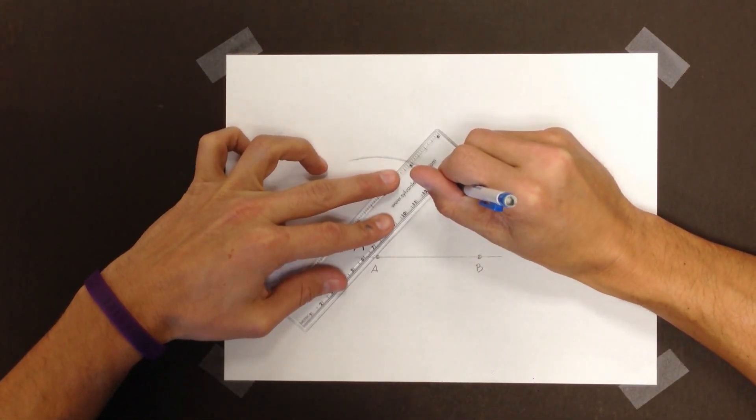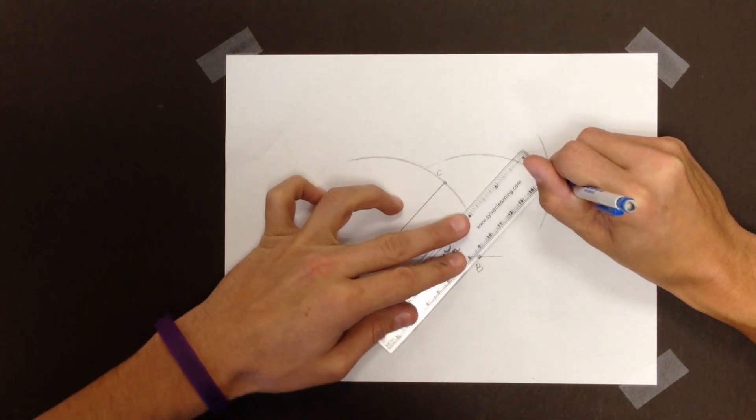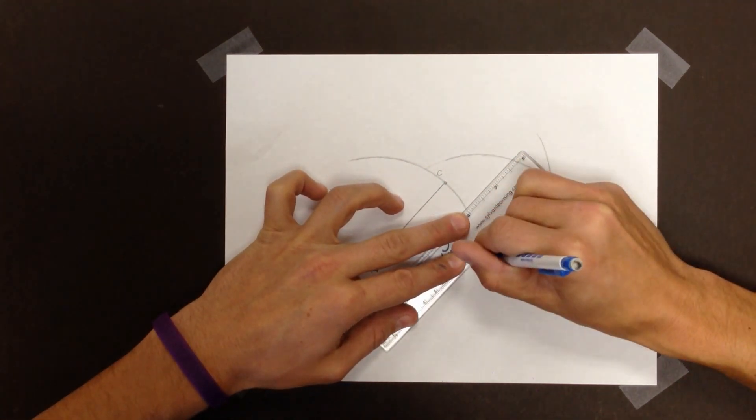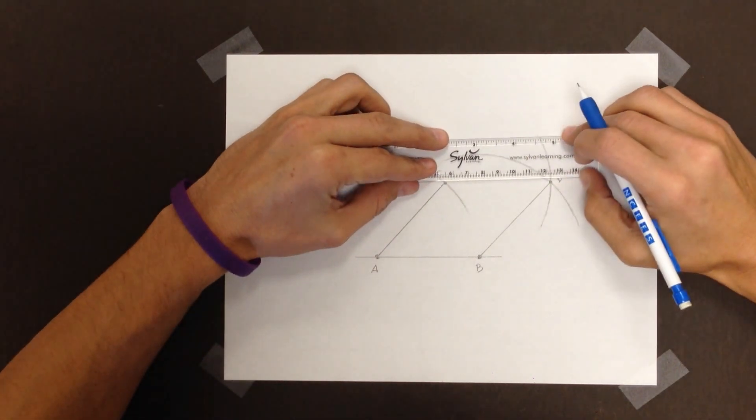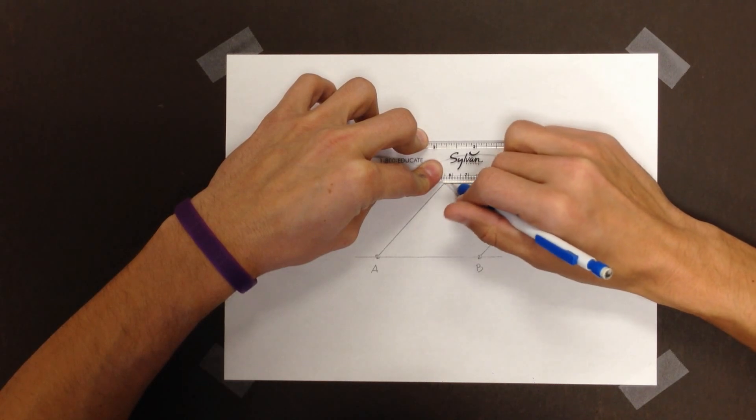I'll connect A to C, D to B, and the line parallel to the original line I drew, D to C.